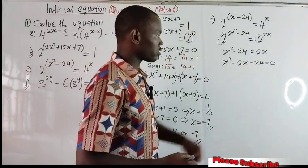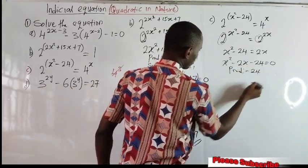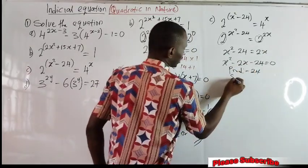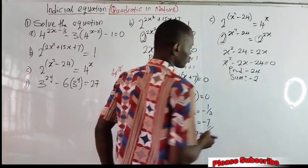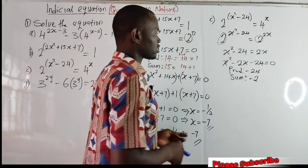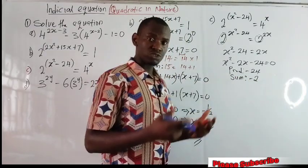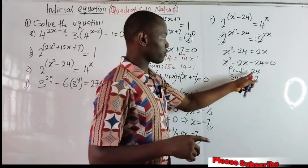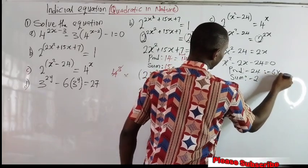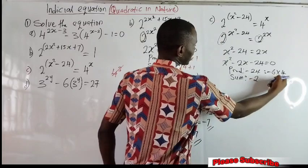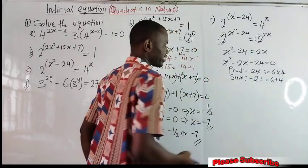At this point we factorize. Get your product first, which is the constant: minus 24. Don't forget to take your sign. Then get your sum, which is the coefficient of x: minus 2. We are looking for two factors that when added give minus 2 and when multiplied give minus 24. That should be minus 6 and 4: minus 6 times 4 gives negative 24, and minus 6 plus 4 gives negative 2.